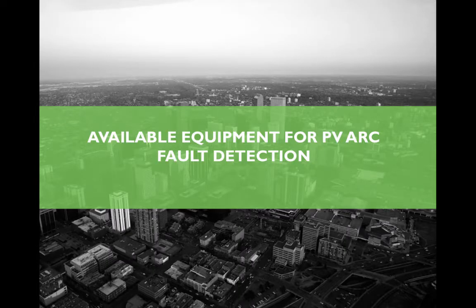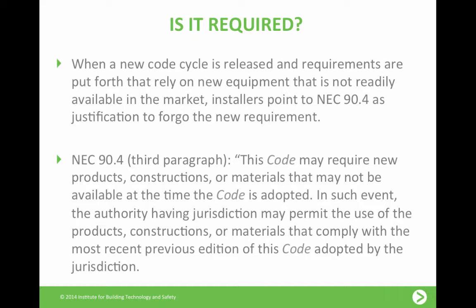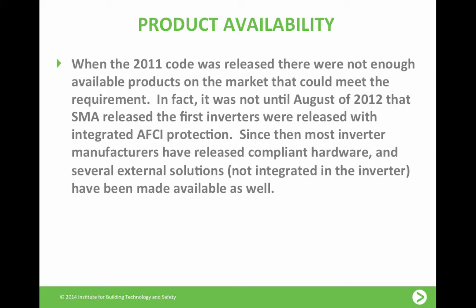So what about available equipment for PV arc fault detection? When a new code cycle is released, if the requirements rely on new equipment not readily available on the market, installers point to NEC 90.4 as justification to forego the new requirement. NEC 90.4 states: 'This code may require new products, constructions, or materials that may not be available at the time the code is adopted. In such an event, the authority having jurisdiction may permit the use of products or materials that comply with the most recent previous edition of this code.' Back when the 2011 code was released, there were not enough available products on the market. It was not until August 2012 that SMA released the first inverters with integrated AFCI protection. Since then, most inverter manufacturers have released compliant hardware, and several external solutions not integrated in the inverter have been made available as well.